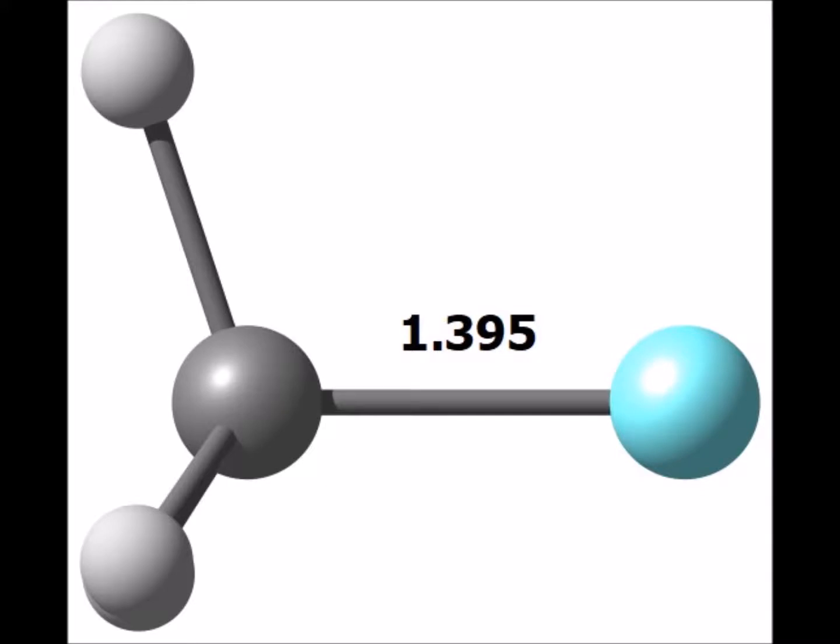Here is the computed structure of fluoromethane, with the fluorine atom in light blue, the carbon in gray, and the hydrogen atoms in white. Notice that carbon has sp3 hybridization, and that the carbon-halogen bond is a short 1.395 angstroms.